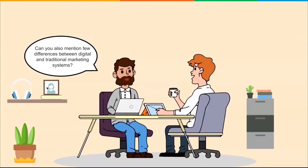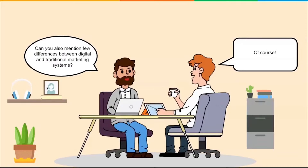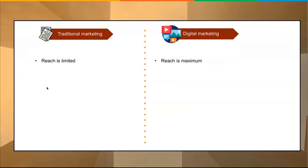One gentleman asks: can you mention a few differences between digital and traditional marketing systems? The expert responds: of course, I can certainly clarify a few differences. With traditional marketing, we're talking about print, radio, billboard, newspaper, TV — anything that's not on your mobile or laptop.